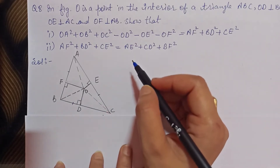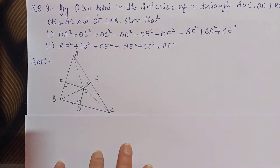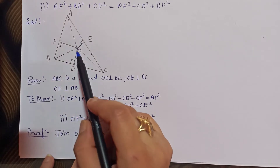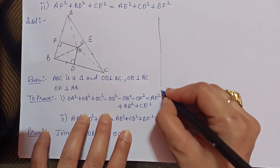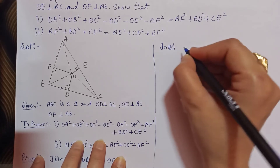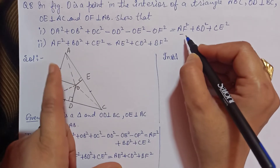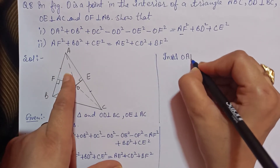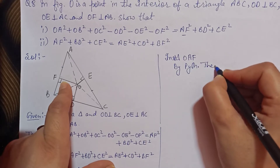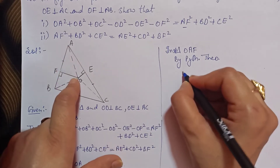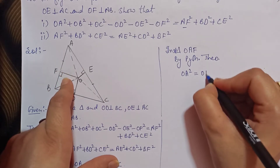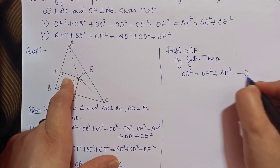جو given ہے وہ write کریں گے اور جو proof کرنا ہے وہ بھی write کریں گے۔ Proof میں سب سے پہلے join کر رہے ہیں OA، OB اور OC۔ In right triangle OAF، by Pythagoras theorem: OA² = OF² + AF². اس کو equation 1 لے لیں گے۔